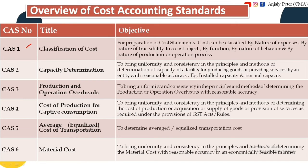Cost Accounting Standard 1 is Classification of Cost — when preparing a cost statement, we classify costs by nature of expense, class of cost, traceability, and behavior. Cost Accounting Standard 2 is Capacity Determination — determining methods and principles for installed capacity and normal capacity in an organization.